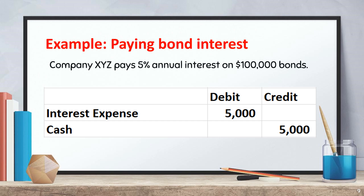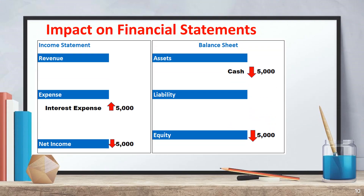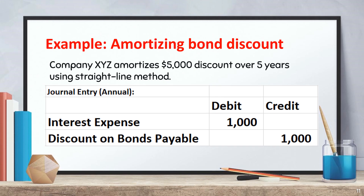Next, let's move on to interest payments. Companies typically pay interest semi-annually or annually. Example: Company XYZ pays 5% annual interest on $100,000 bonds. Journal entry: debit interest expense $5,000, credit cash $5,000. Interest payments decrease cash and are recorded as an expense, reducing net income. On the income statement, interest expense increases by $5,000, reducing net income by $5,000.